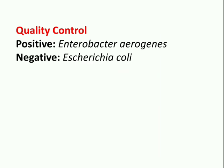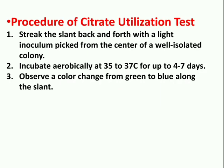For quality control, the positive organism used is Enterobacter aerogenes and the negative organism is Escherichia coli. Procedure: streak the slant back and forth with a light inoculum picked from the center of a well-isolated colony, then incubate aerobically at 35 to 37 degrees Celsius for 4 to 7 days. Observe for a color change from green to blue along the slant.